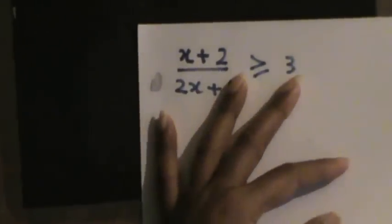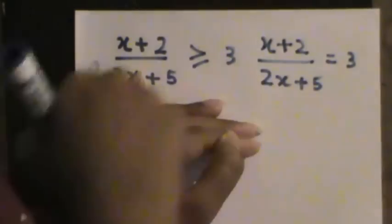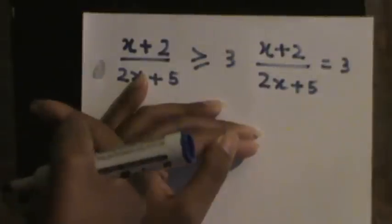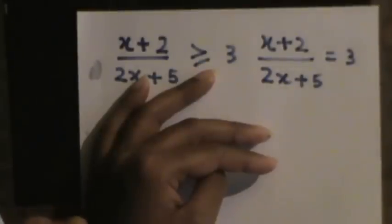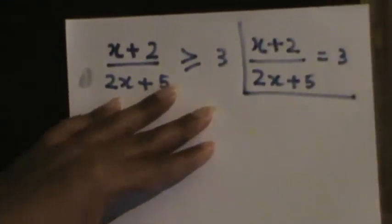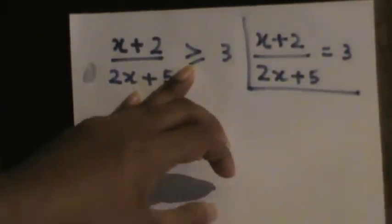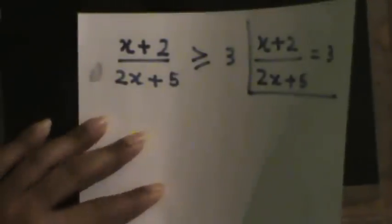When the left-hand side is a quotient and the right-hand side is an integer, how do we solve this? If we were given (x + 2)/(2x + 5) = 3, you would cross-multiply and solve for x to get a finite value. But when it is greater than or equal to 3, how do we solve this? That is the intuition of this video.